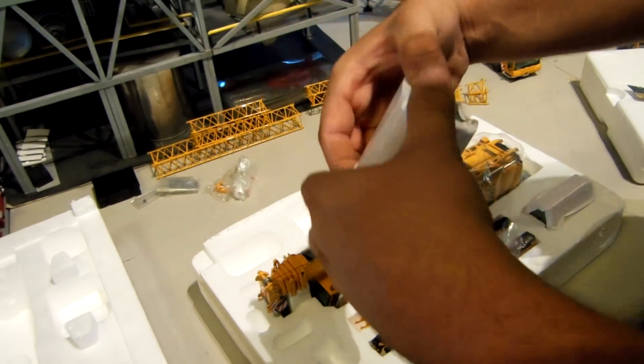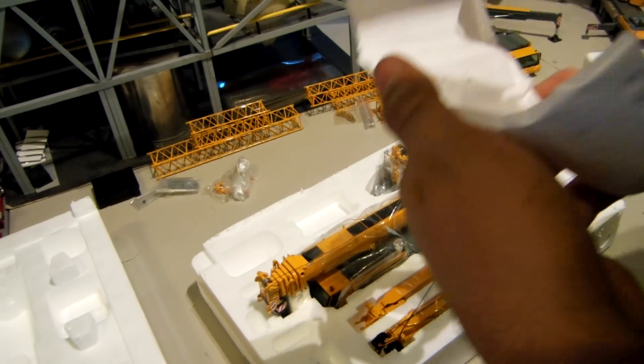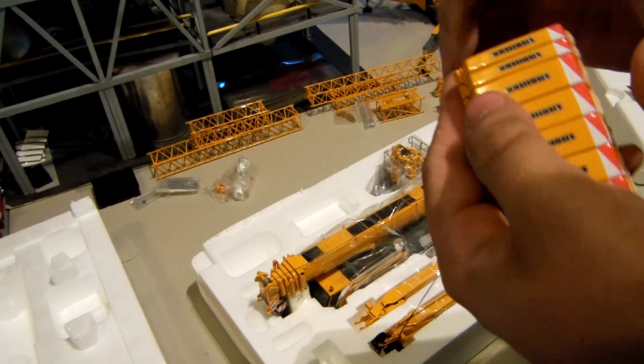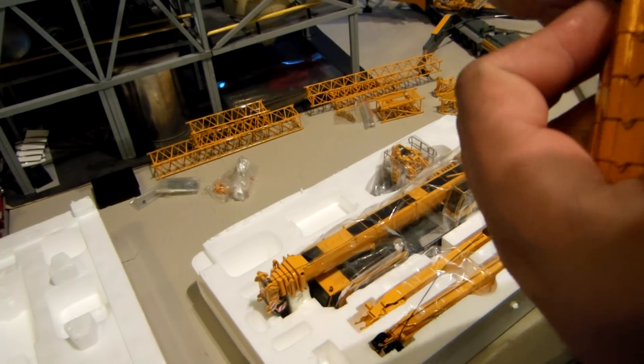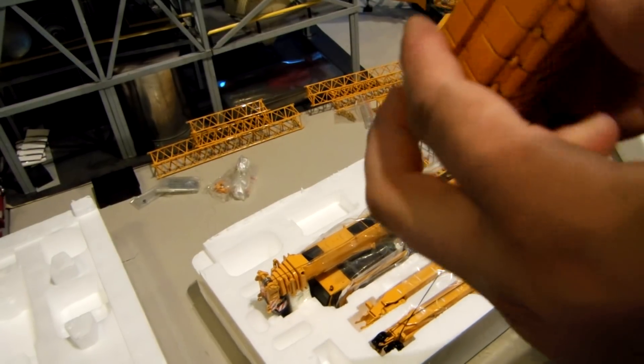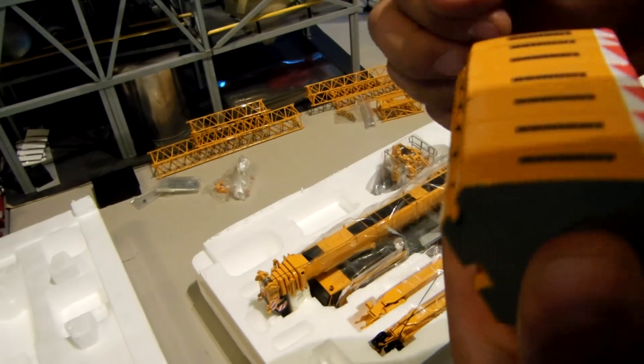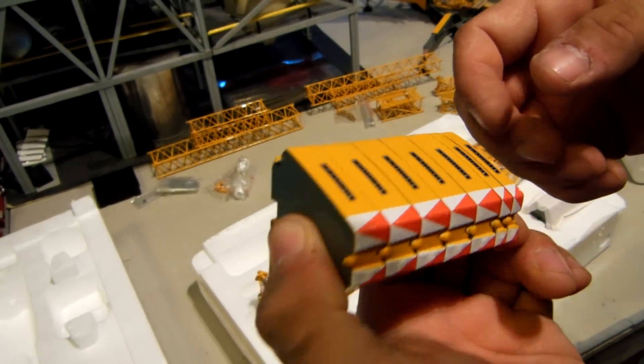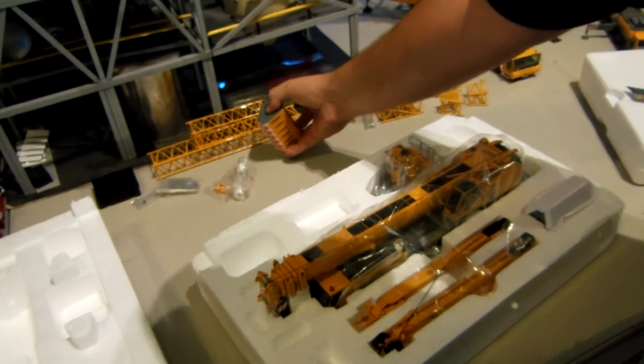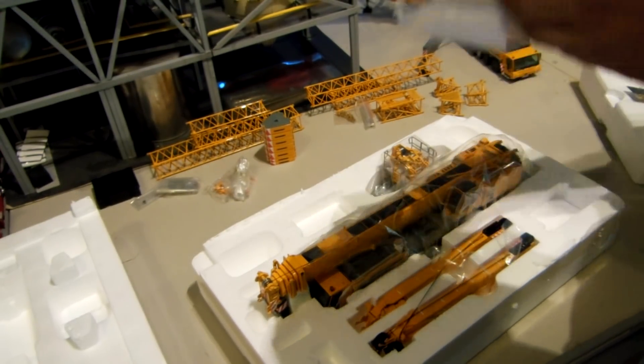Winch key, your hook, the whip line tip. There's counterweights, really heavy. Thing I don't like about these are that they don't have lifting lugs on them. They're like the NZG weights on the 11-200 and LR-1300. Here's the other weights.